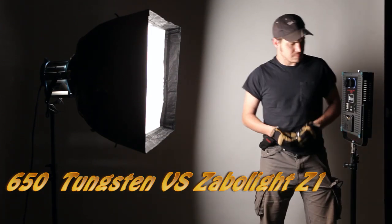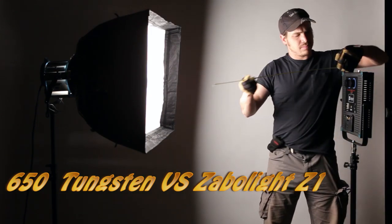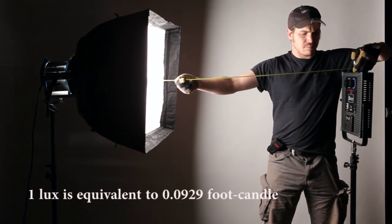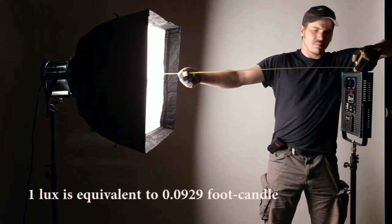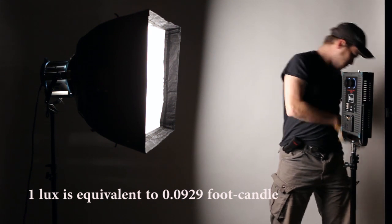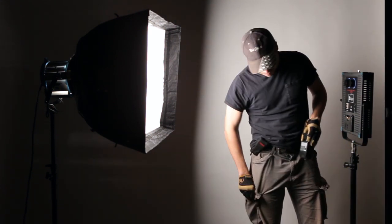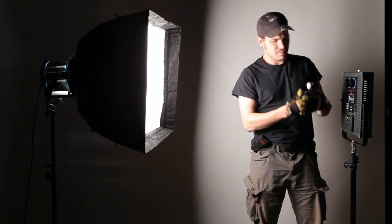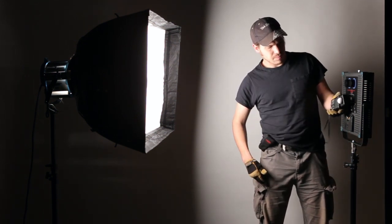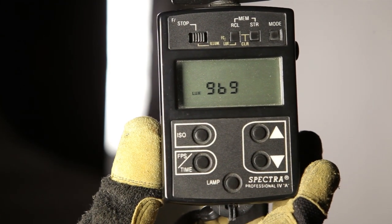We're going to conduct a test to see the lux value of a Zabolite 1x1 against an Aries 650 with a Video Pro Chimera. We're going to use the standard 3.5 feet and take a lux reading. 969 lux.